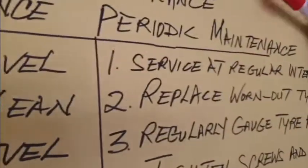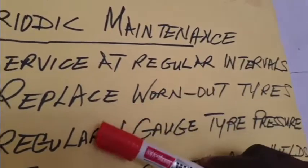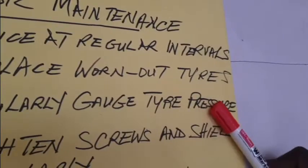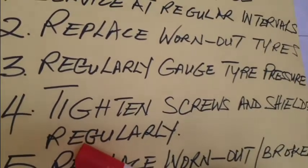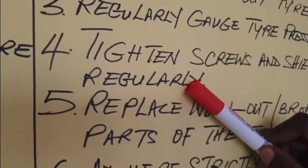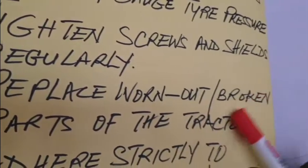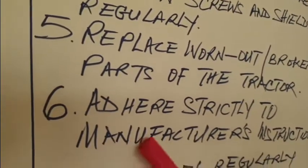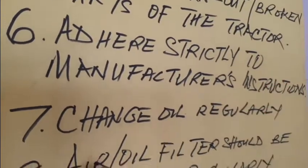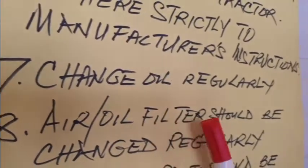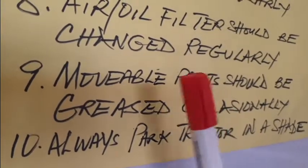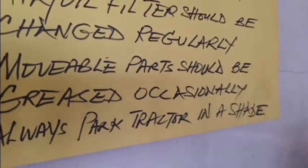The periodic maintenance practices include: service at regular intervals, replace worn-out tires, regularly gauge tire pressure, tighten screws and shields regularly, replace worn-out or broken parts to avoid accidents, adhere strictly to the manufacturer's instructions, change oil regularly, change air or oil filters regularly, grease movable parts occasionally for easy lubrication, and always park the tractor in a shade, not under the sun.